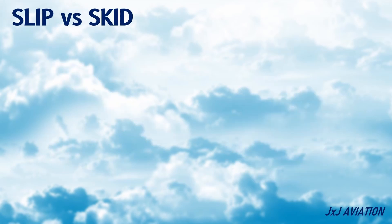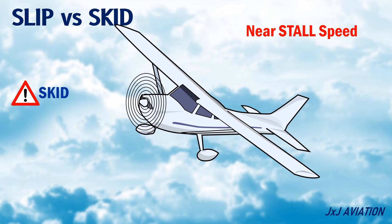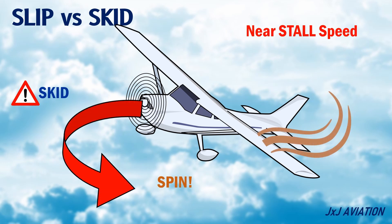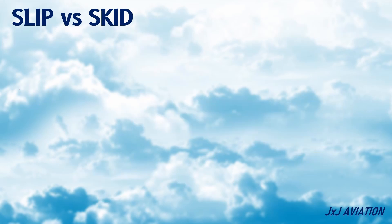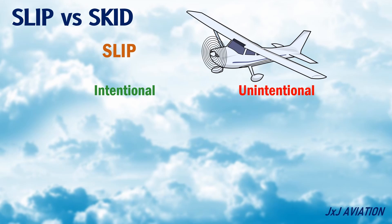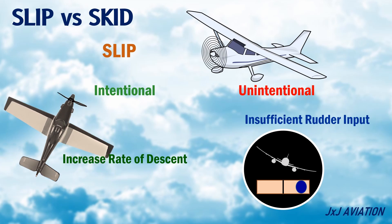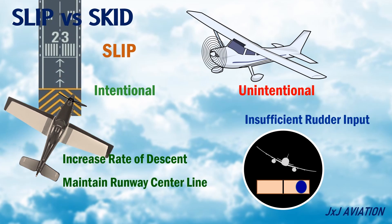A skid versus a slip: a skid is more dangerous when compared to a slip. This is because if the aircraft is flying near its stall speed, a skid would result in an aircraft spin. A slip may be unintentional or intentional. An unintentional slip is because of insufficient rudder input. An intentional slip may be used to increase the rate of descent or to maintain the runway centerline during a crosswind landing.